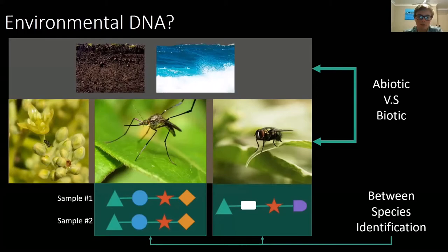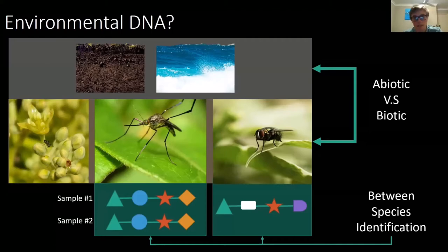One thing eDNA can't do is tell you if more sequence reads correlates positively with more of a specific insect. If a flower has large reads of honeybee, it doesn't necessarily mean lots of honeybee visits — eDNA may amplify honeybees with bias. But it does let you get at taxonomic diversity: presence, absence, what species are in your sample and how many. It's a very powerful technique for this.